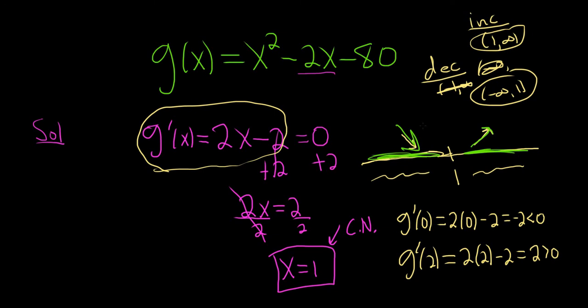Notice the behavior. It gets smaller and smaller, then it starts to get bigger. That means you have what's called a relative minimum at 1. But the question did not ask for that. It just wanted the increasing and decreasing. That's it.